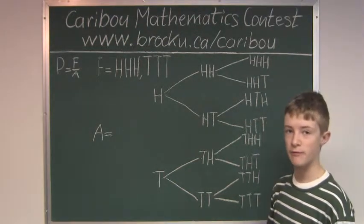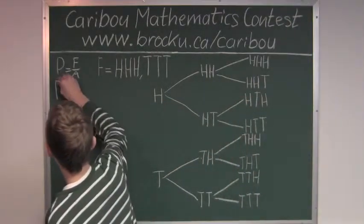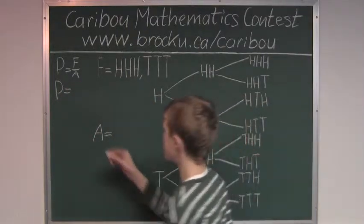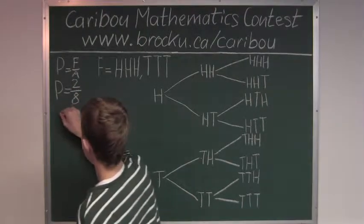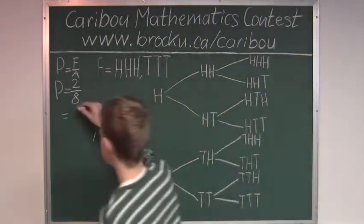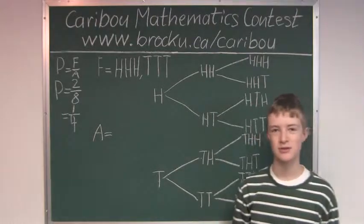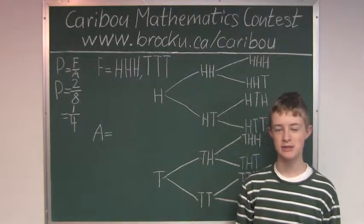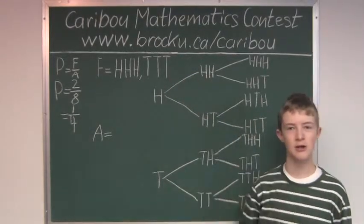Then the probability of favorable events would be 2 over 8, which is also 1 over 4. So the answer is 1 over 4. If you'd like to know more about this contest, please feel free to visit our website at www.brocku.ca/caribou.